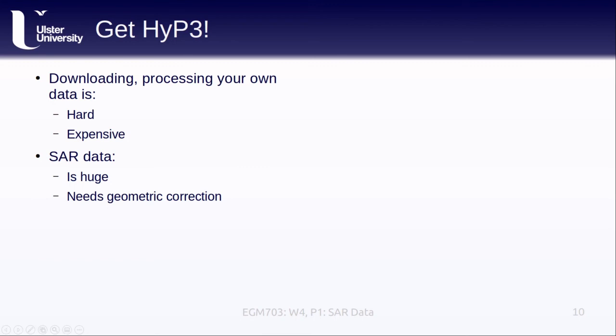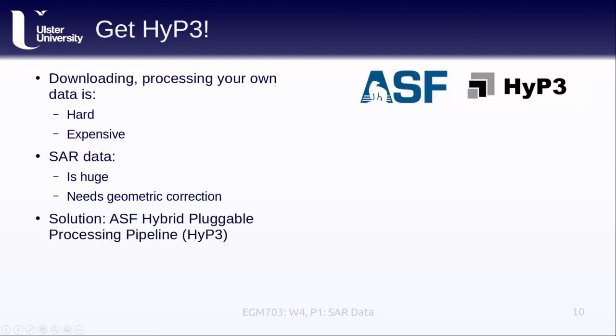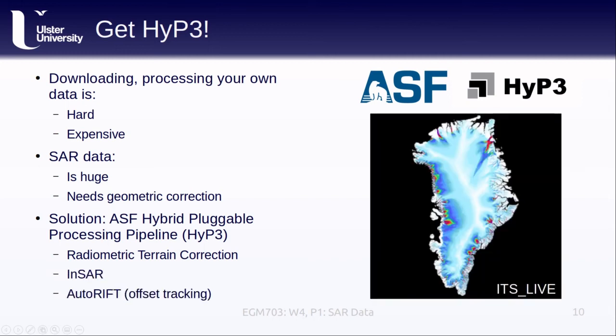As you have no doubt noticed in the Week 3 practical, downloading and processing your own SAR data is hard and expensive, especially in terms of storage and computation. Part of this is because SAR data files are huge, and because they require various forms of geometric correction, which require a lot of processing. So one solution is to get HYPE. The ASF Hybrid Plugable Processing Pipeline, or HYPE, provides free on-demand radiometric terrain correction, in-SAR processing, and offset tracking products. All you have to do is order the images from Vertex, select the different kinds of processing that you want, and you can download your analysis-ready datasets once the processing is finished. If you are interested in working with SAR datasets, especially for your master's project, then I highly recommend that you look into this service.